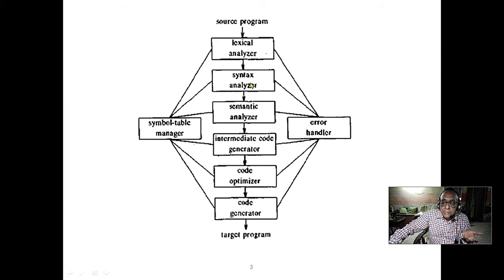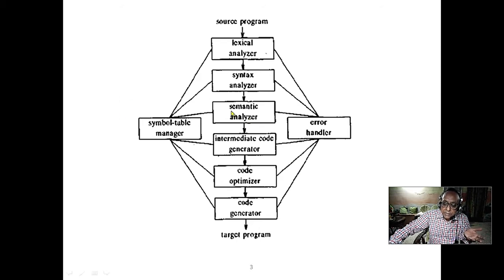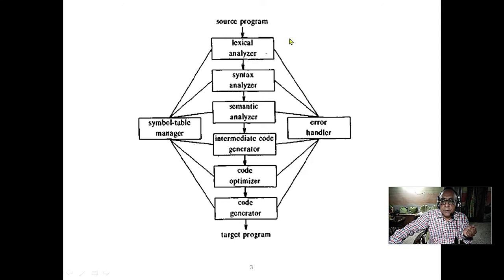After syntax analysis comes the semantic analyzer, which is relatively easy. It checks whether, for example, you are putting a floating-point number into an integer variable without any casting operator. It basically checks casting and type-related issues. This portion is called the analysis portion of the compiler.